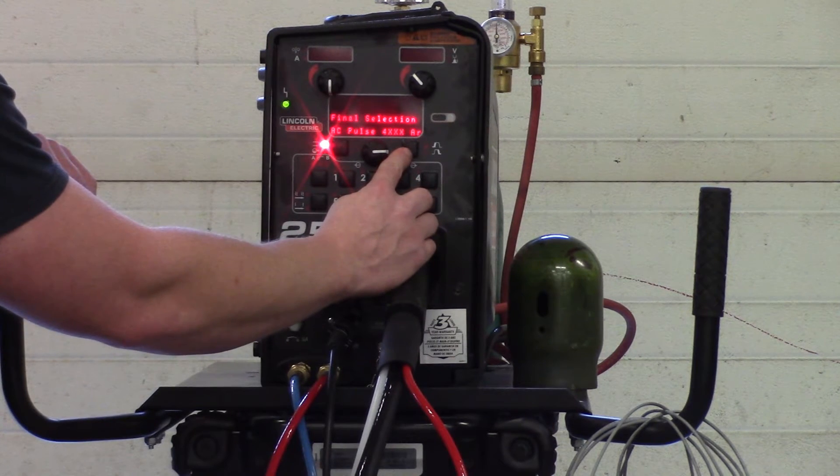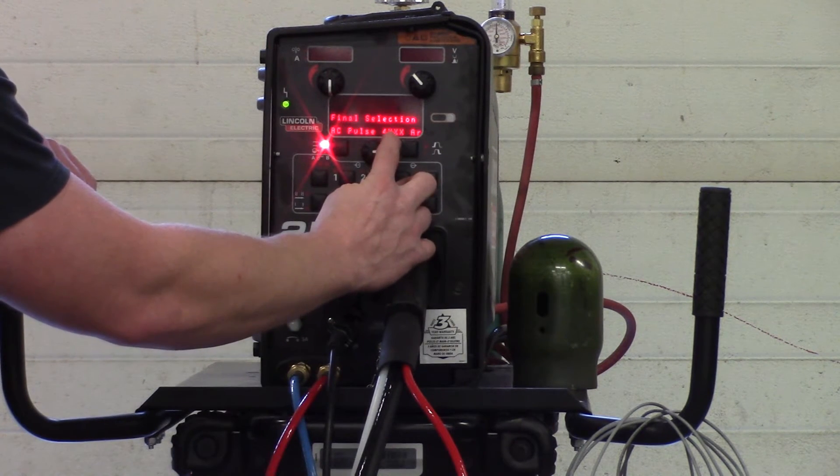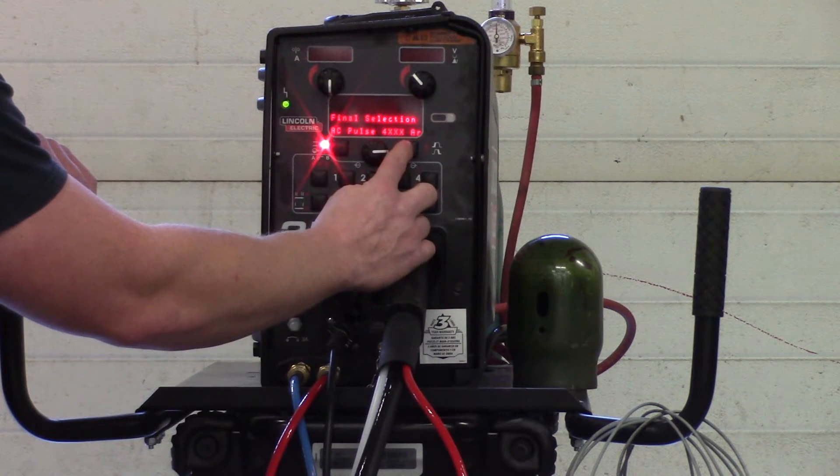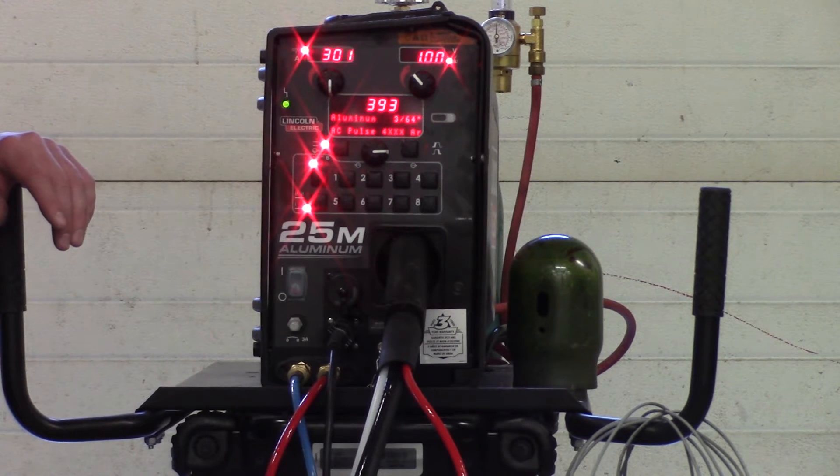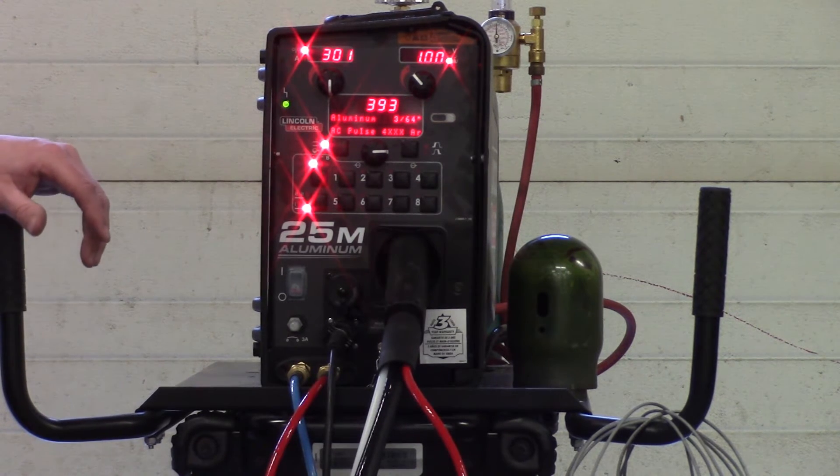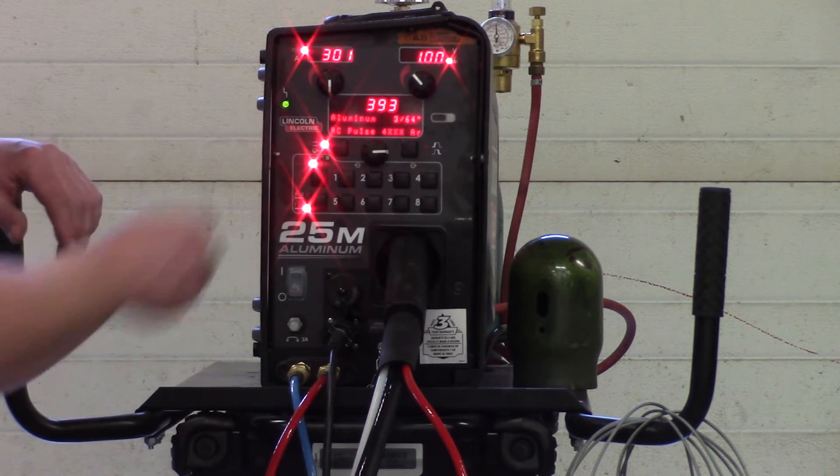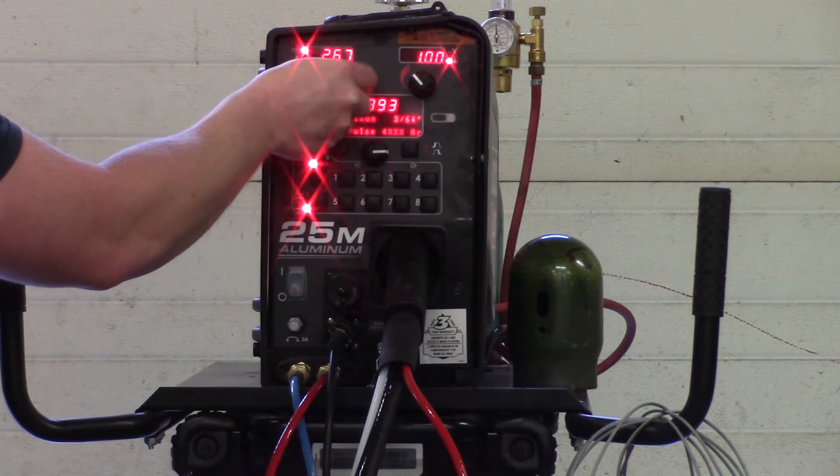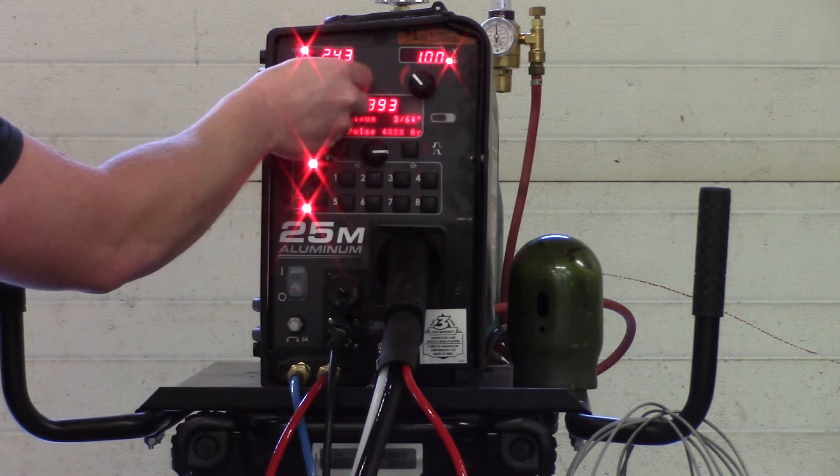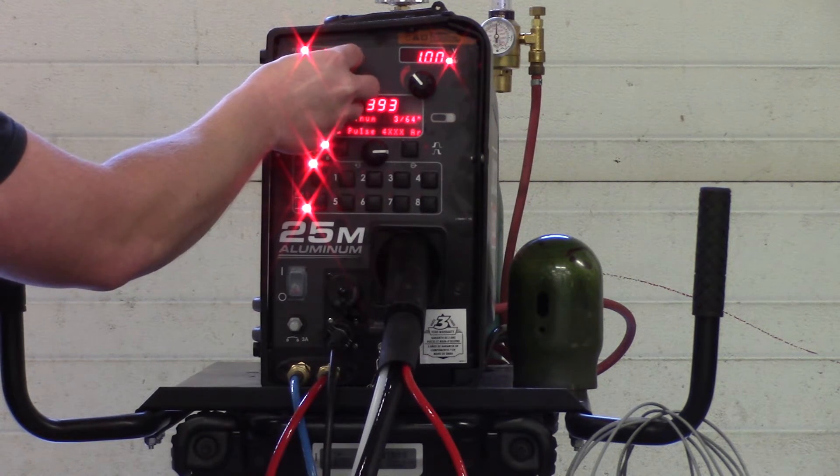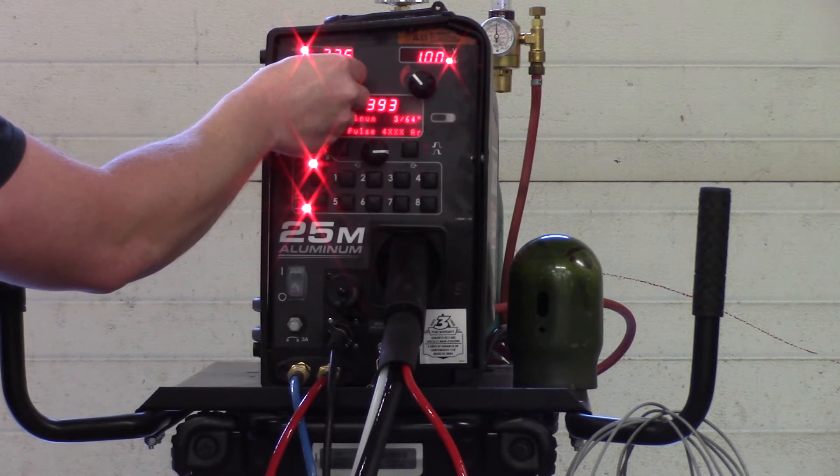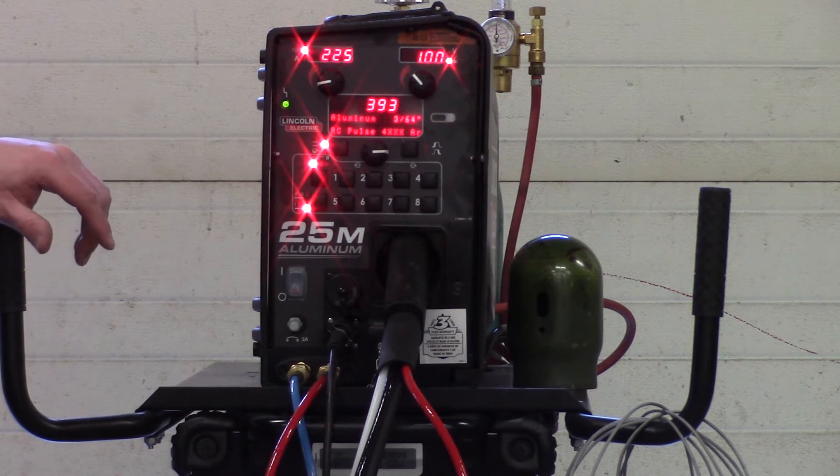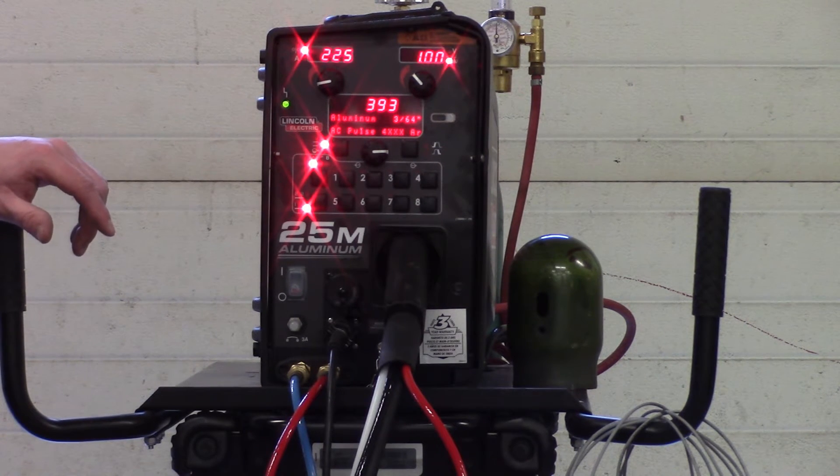Now it's asking for the wire and the shielding gas. 4000 series aluminum. We're using 4043. Straight argon. So there it is. Pops up. 393. That's the program we're using. The wire feed. We did a test one on here. We were around 225. Trim at 1.0. So we'll go ahead and start welding these up. See how they come out.